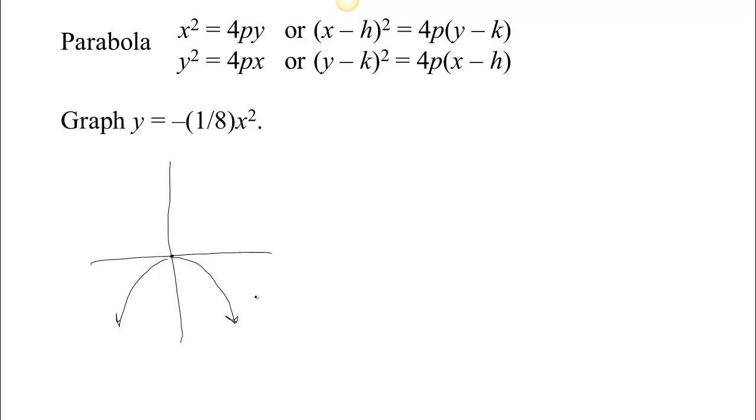Good values to pick here would be ones where x squared turns out to be a multiple of 8 so that this fraction would go away. For example, if you were to choose 8 for the input, then you'd have 8 squared, that's 64. And 1 eighth of 64 is 8 so you'd have the point 8, negative 8 on the parabola. So it's nice to choose ones where this will turn out to be a nice value.